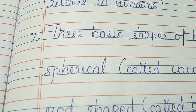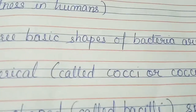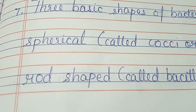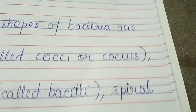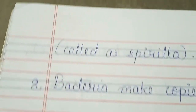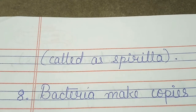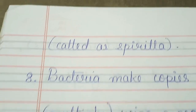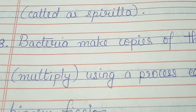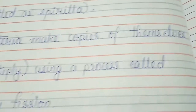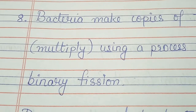Three basic shapes of bacteria are: spherical, called cocci; rod-shaped, called bacilli; and spiral, called spirilla. Bacteria make copies of themselves using a process called binary fission.